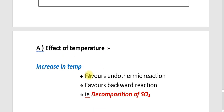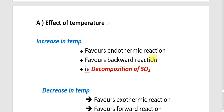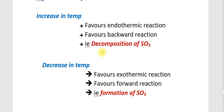For the temperature effect: an increase in temperature favours the endothermic reaction, that is the backward reaction — the decomposition of SO3 will take place. A decrease in temperature favours the exothermic forward reaction, that is the formation of SO3.